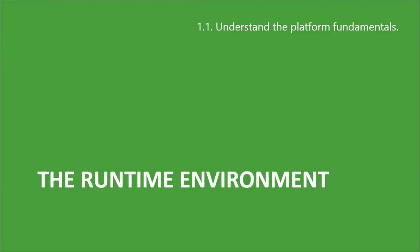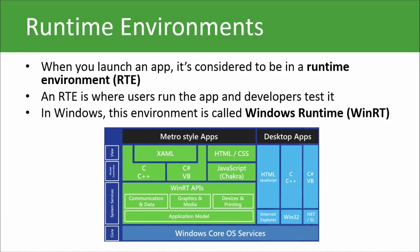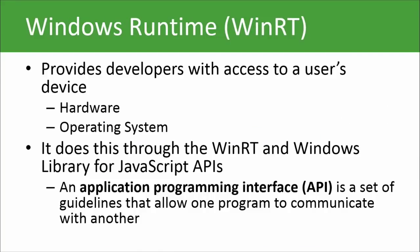Next, let's talk about the runtime environment. When you build an application, it runs — it executes. Windows has a specific version called the Windows Runtime Environment, or WinRT. The runtime environment is where users run the app and also where you're going to do a lot of testing. Windows Runtime provides developers with access to the user's device and its operating system — hardware components like a camera or GPS system — as well as different services provided by the operating system, through the WinRT and Windows Library for JavaScript APIs.